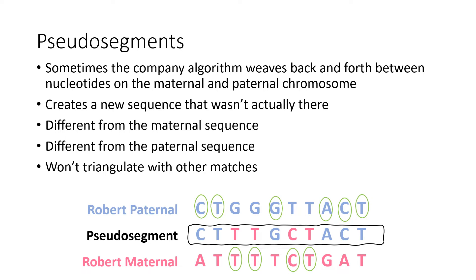Many companies don't use phased data, so there's an increased chance of having these pseudo segments created. Ancestry says that they use phased data and try to phase the data before they match it, but other companies don't. My example today is from MyHeritage.